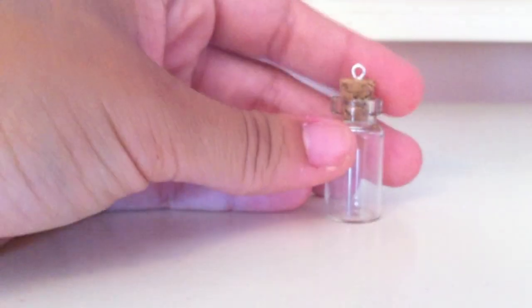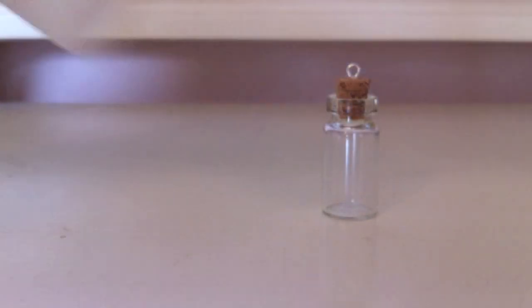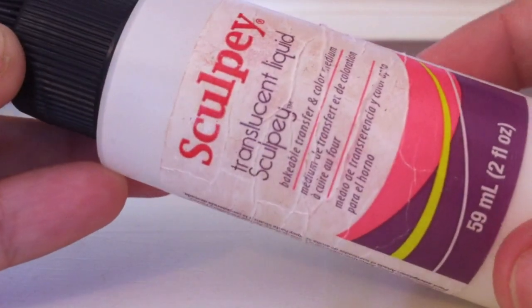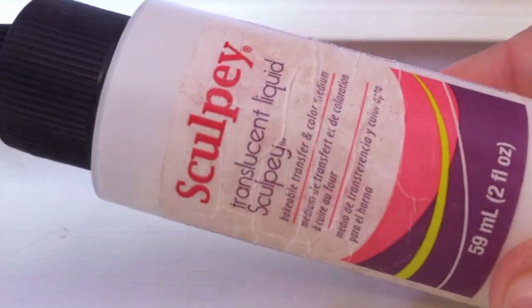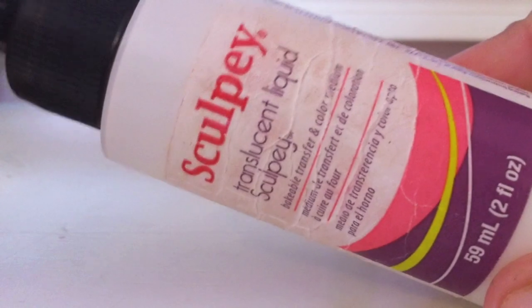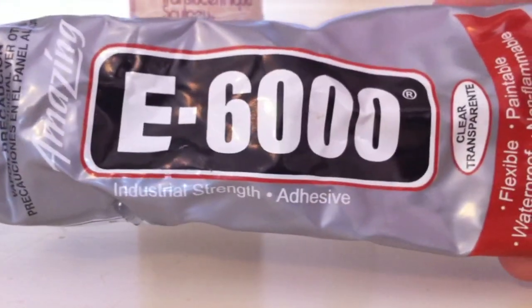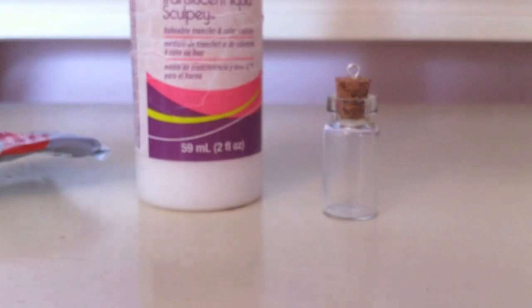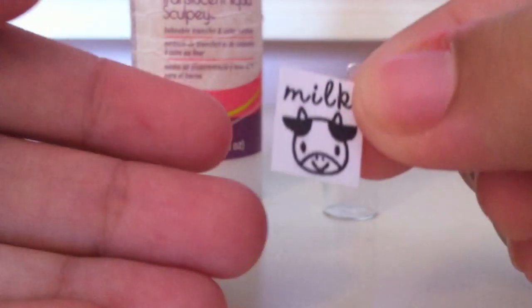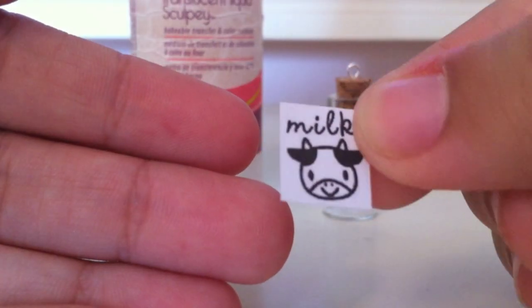You're also going to need translucent liquid Sculpey, which you can find at your local craft store or online. You're going to need a very strong craft glue—in this case I will be using E6000. And last but not least, a little milk label which I printed from Google images.